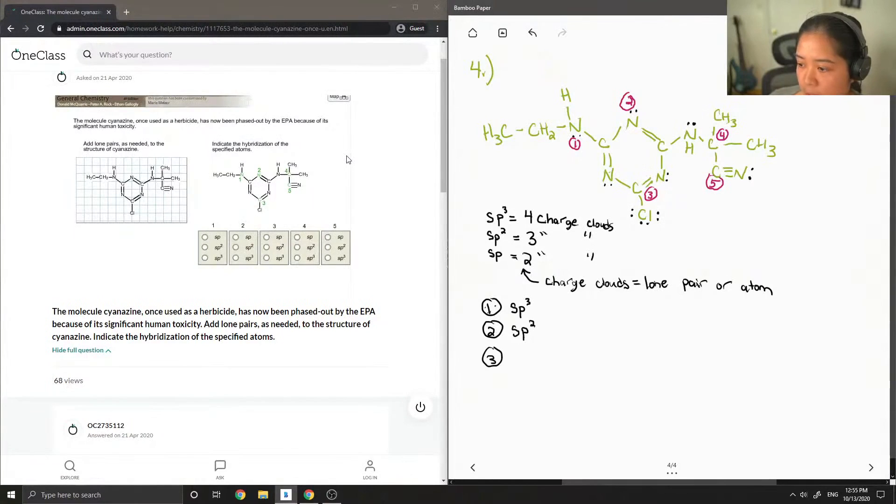Next let's look at this carbon. You have one, two, three atoms. So this carbon is also SP2.